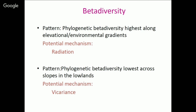Stepping back to look at these patterns: the first pattern is that phylogenetic beta diversity is highest along elevational gradients, higher than we would expect given a null model. The potential mechanism there is radiation, which is consistent with what we think happened with hummingbirds in the Andes Mountains. The second pattern is that phylogenetic beta diversity is lowest across slopes in the lowlands, and here the potential mechanism is likely vicariance, where the mountains actually resulted in isolation and divergence of sister taxa — relatively closely related species.